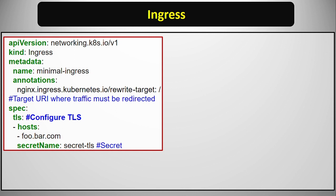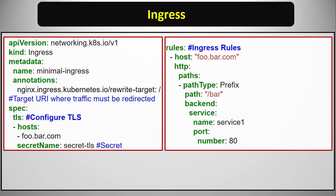We define an annotation which specifies the URI to which the traffic should be redirected. For TLS traffic, we define the host and the secret to be used, which contains the certificate information. Then we define a rule where we specify the subdomain and associated service.